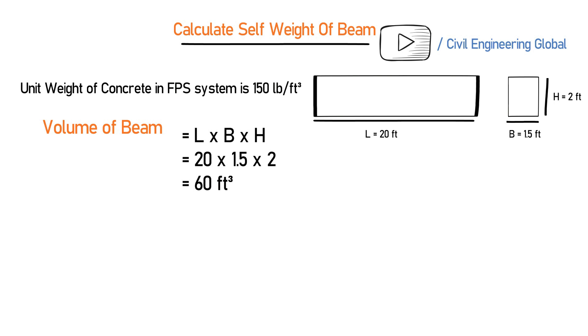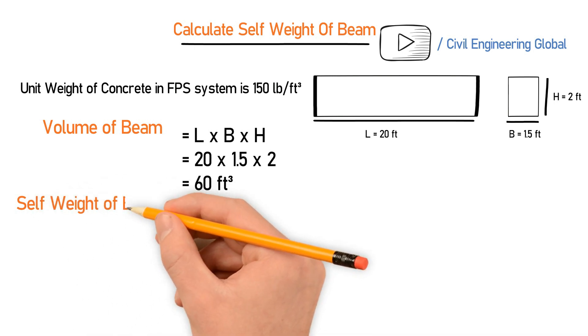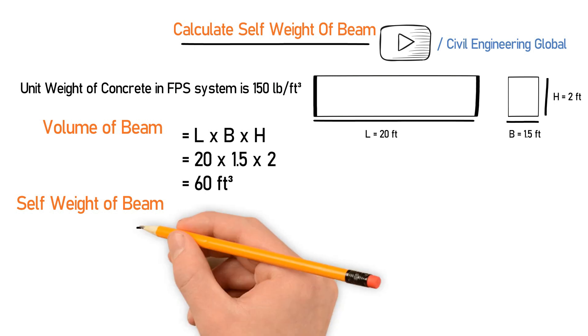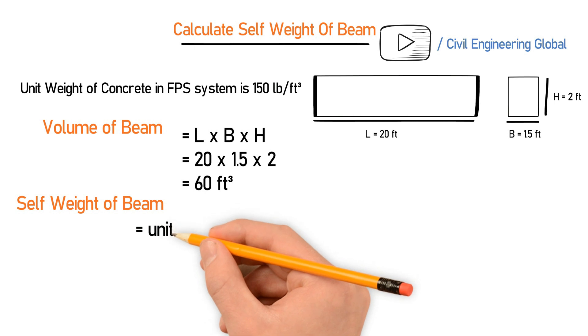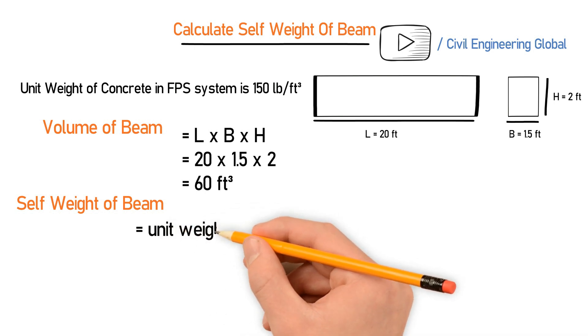After finding out the volume of the beam, let's find out the self weight of this beam. For the self weight, we have the formula: self weight of beam equals unit weight of concrete multiplied by volume of beam.